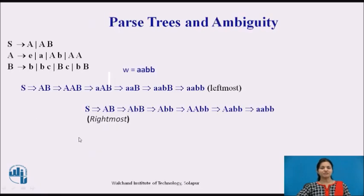Then what is ambiguous? In this example, S is producing AB; A is producing null, AA, B, and AB; B is producing B, BC, BC, and BB. Now here we will try one word: AABB.